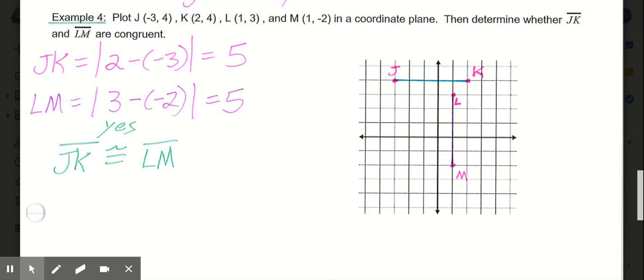Now another way you could simply do this is just looking at the drawing. And we could count from J to K, 1, 2, 3, 4, 5 units. And then from L to M, 1, 2, 3, 4, 5 units. So both are the same distance, or same length. So yes, they are congruent. And it does not matter for segment congruence if one's vertical and one is horizontal, as long as they are the same length.